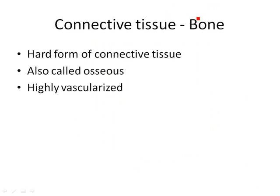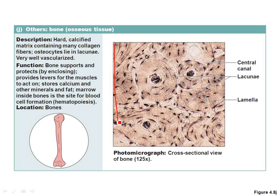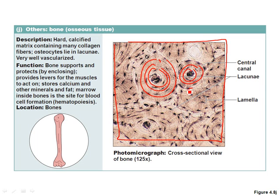Another type of connective tissue is bone — the hard one. All other connective tissues are soft and pliable, but bone is hard. If you see the word 'osseous,' that also means bone. Bone is highly vascularized, unlike cartilage which has very little blood supply. On a micrograph, bone looks like a bunch of tree rings — it grows from little circular rings. You'll also see lacunae: little cavities where bone-forming cells live.